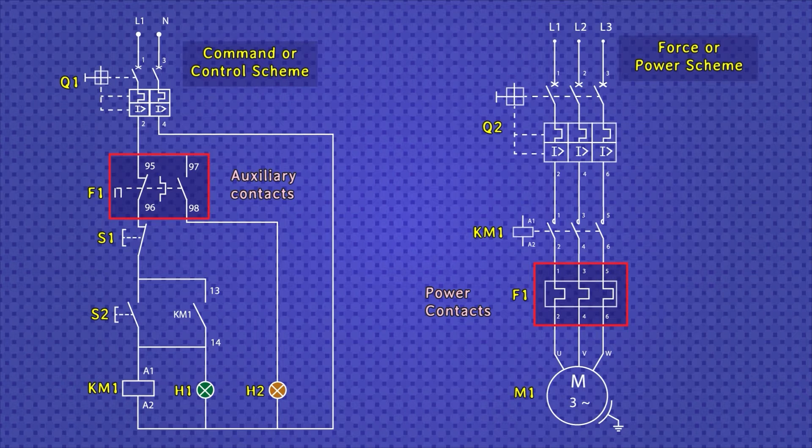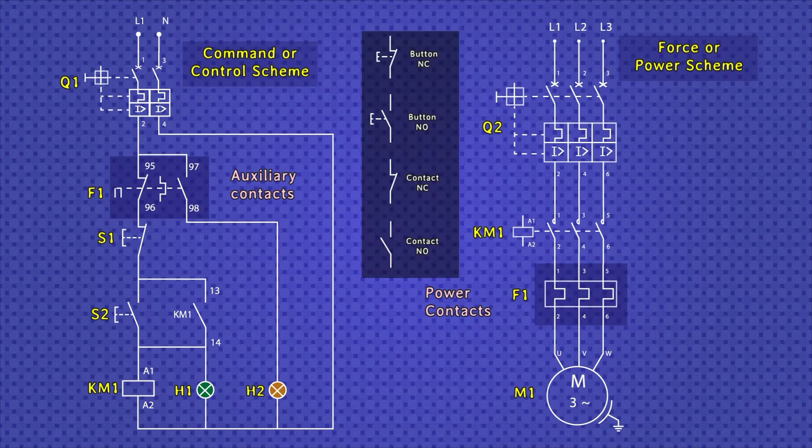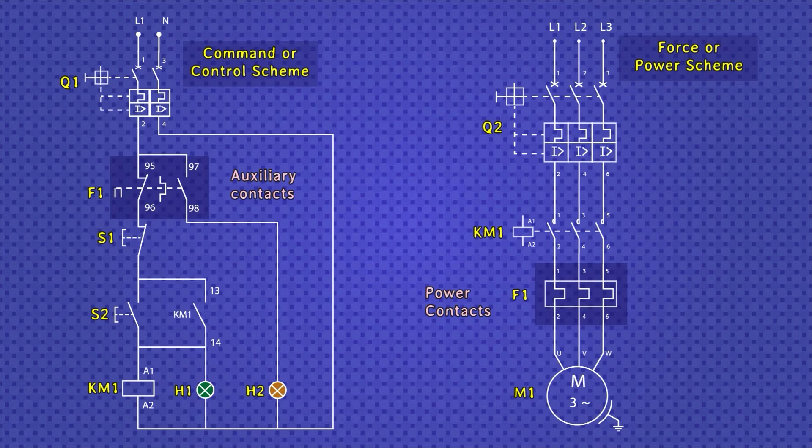Q1 is a thermomagnetic switch responsible for protecting cables and other devices against possible overload or short circuit. F1 is the study element, that is, the thermal relay where, in the control diagram, its auxiliary contacts are connected and in the power diagram they are connected to its main contacts. This element serves the function of protecting the motor against overloads or overheating of the motor. S1 is a normally closed stop button. S2 is a normally open button for start. KM1 is the contactor coil. And contact 1314 is an auxiliary contact that depends on the state of the contactor coil. H1 is a pilot light or gear indicator light. H2 is a warning light or indicator light that activates when the thermal relay trips. Q2 is a three-pole thermomagnetic protection switch. And M1 is a three-phase motor.